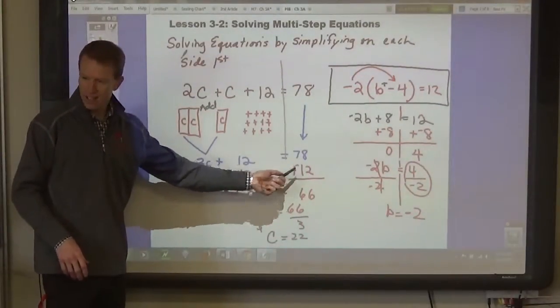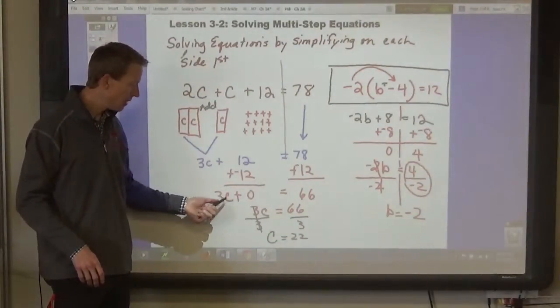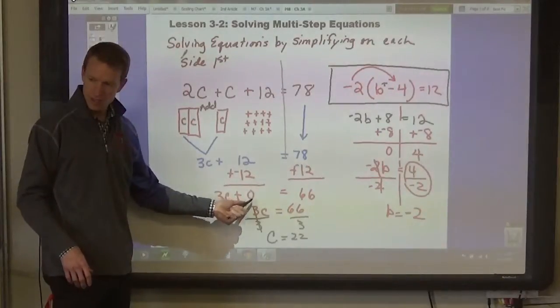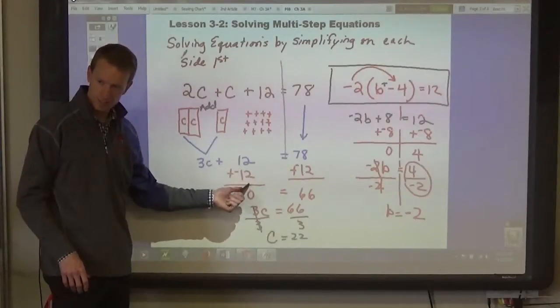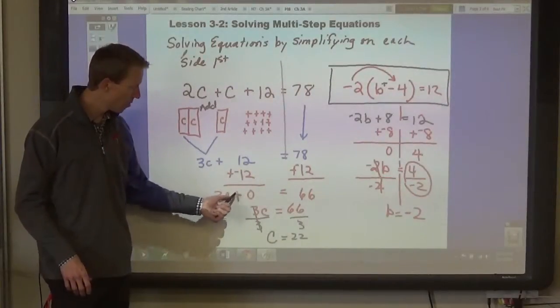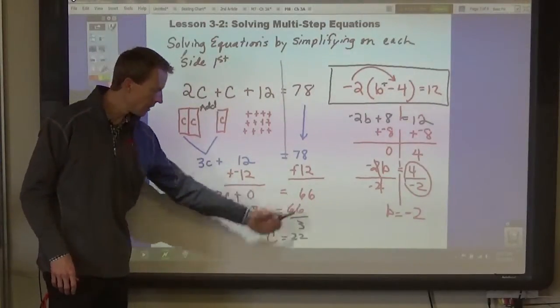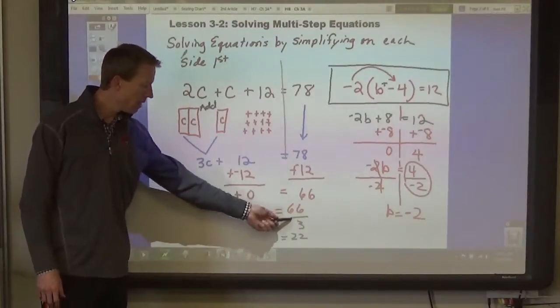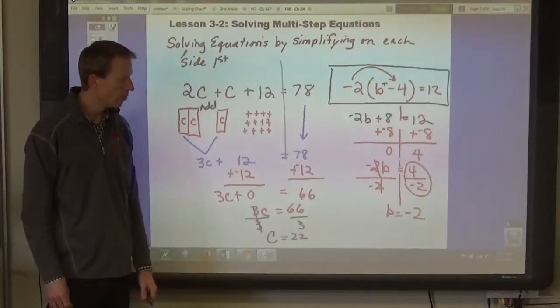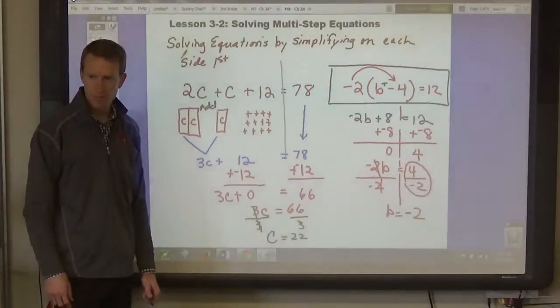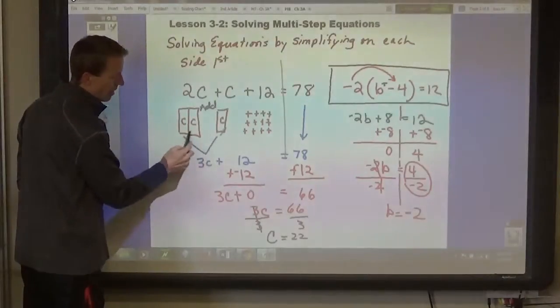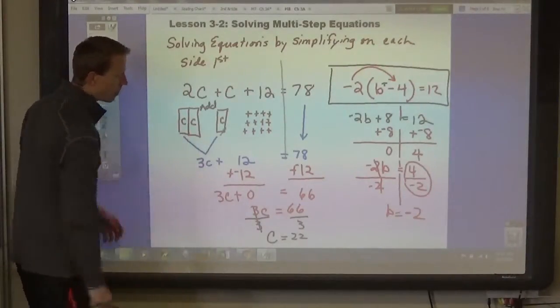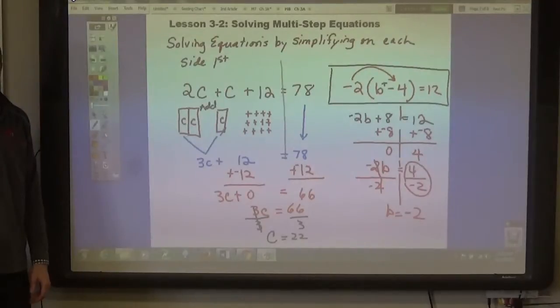Add negative 12 to both sides. So, 3c plus 0. Remember, you have to get 0 here. That's why you add the opposite, right? 3c plus 0 equals 66. Then divide by 3. And c equals 22. Okay? So, this is the step that we're adding. It's this step right here, where you're adding the c's together before you start solving, before you add the opposite and get the variable by itself.